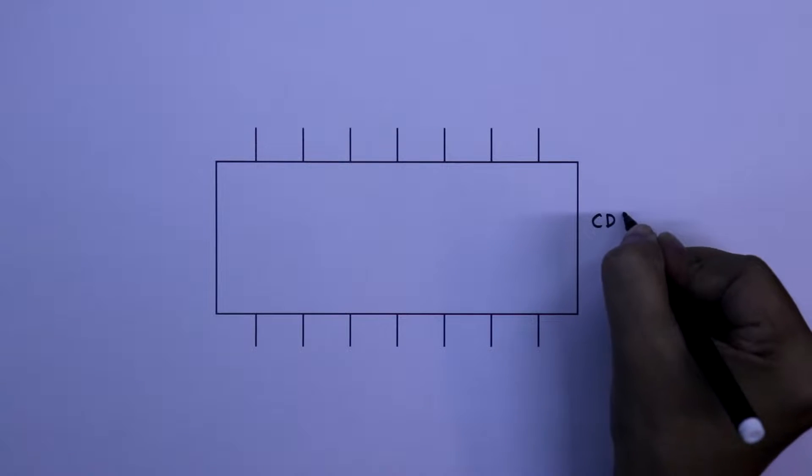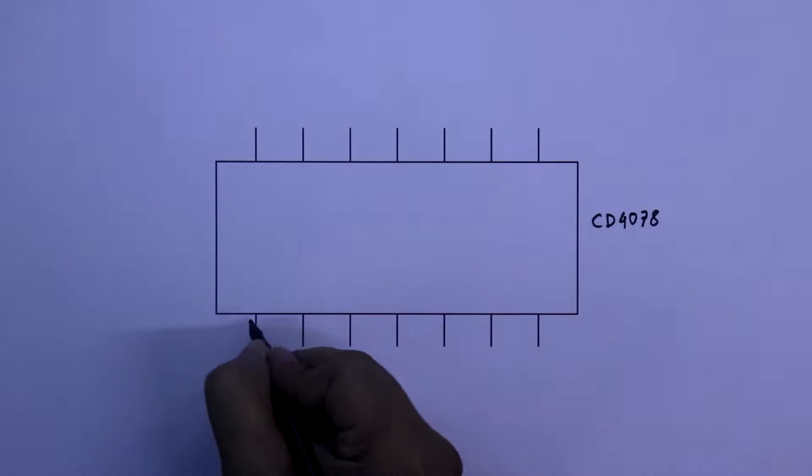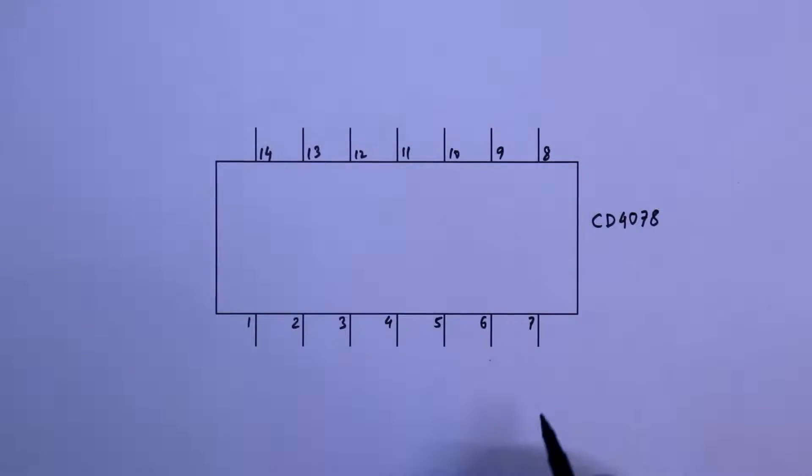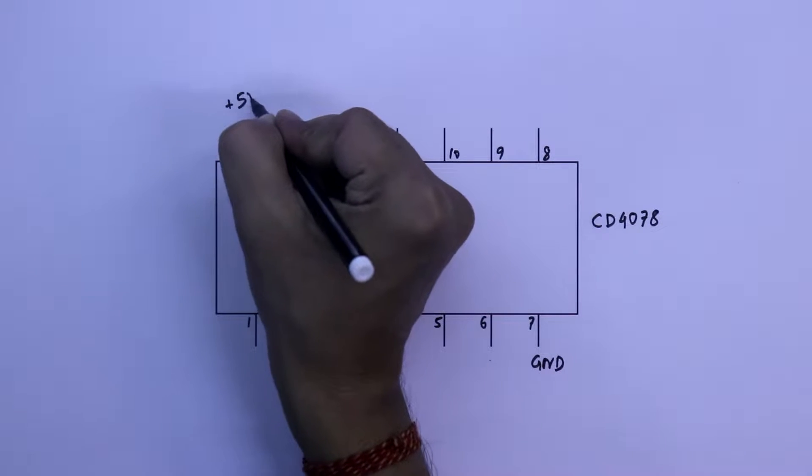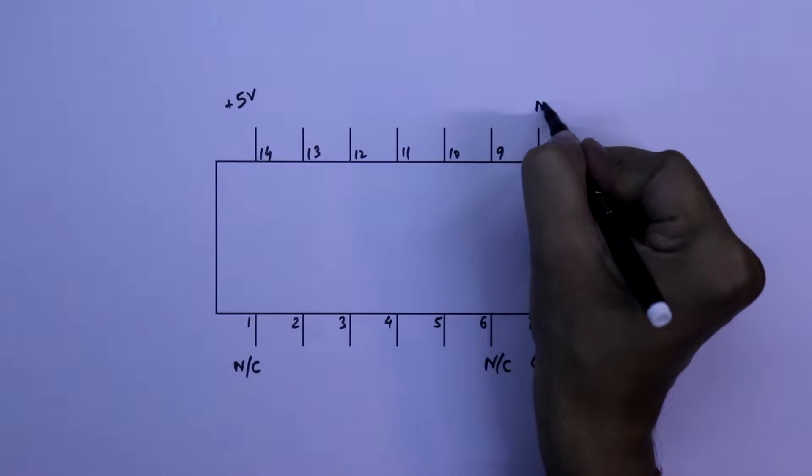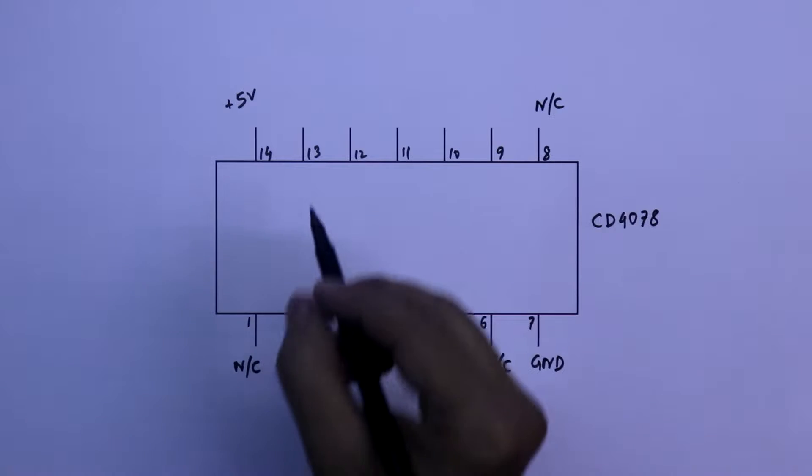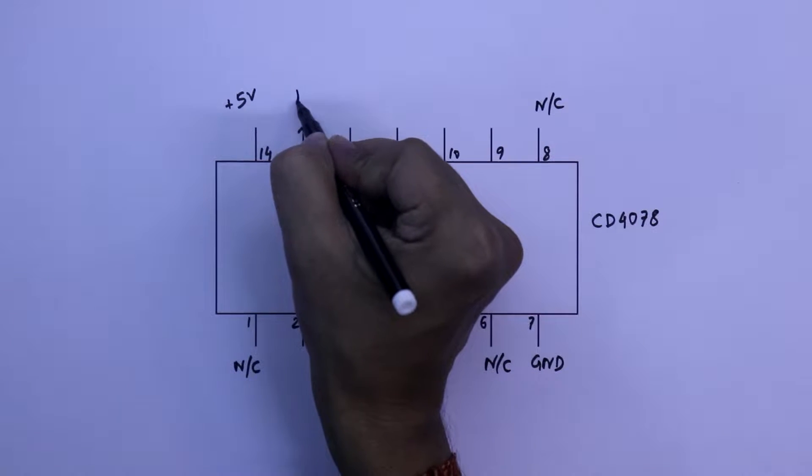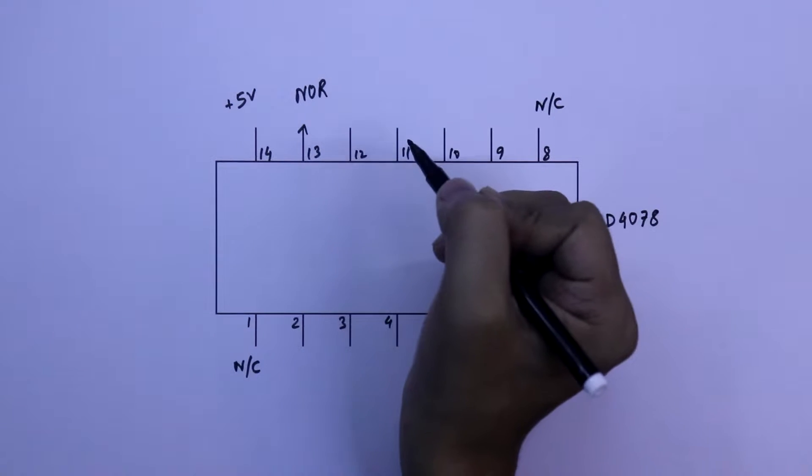CD4078 is an 8-input NOR gate IC. It has 14 pins. Pin number 7 is ground, pin number 14 is VCC and I am going to use plus 5 volts. Pin number 1 is no connection pin, pin number 6 is no connection pin, pin number 8 is no connection pin. Pin number 13 is output, it is NOR output.